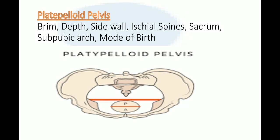In platyploid pelvis, the sacrum is slightly curved — as it was in android and anthropoid — whereas in gynecoid it was deep curved. The subpubic arch is wide, as in gynecoid, whereas in anthropoid and android the subpubic arch is narrow. The usual mode of delivery for platyploid pelvis is vaginal; spontaneous delivery is possible.